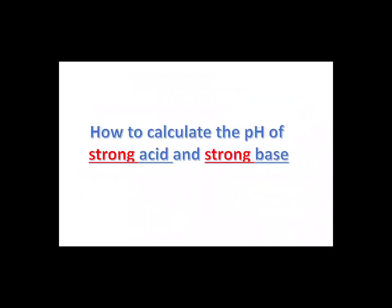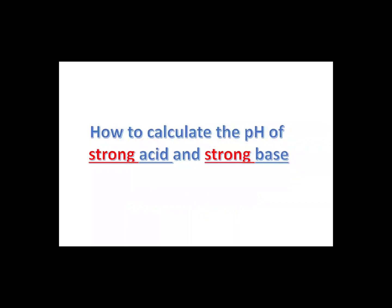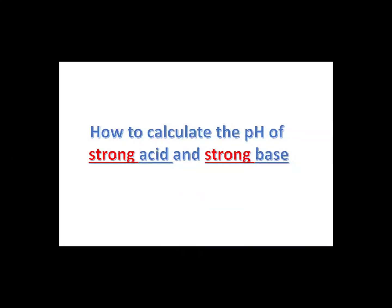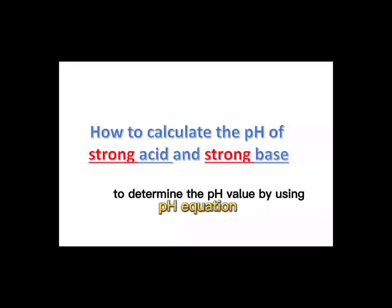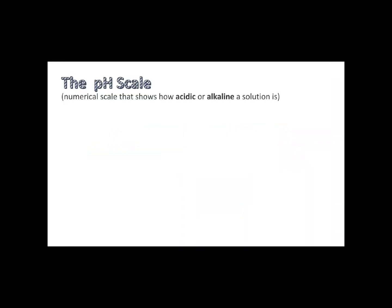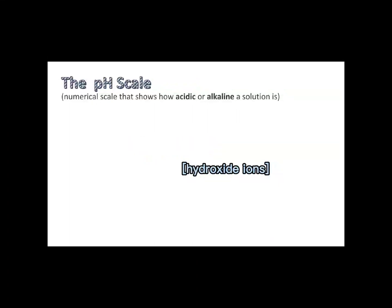Now, let's go to the part of calculating the pH value of strong acid or strong base. As we know, substances can be classified as acidic, basic, or neutral. But how do we determine whether a solution is acidic or basic? Of course, it can be tested with the help of litmus paper, phenolphthalein, or other indicators. For more accuracy, the best way is to determine the pH value of the solutions. Both acids and bases can be measured using the pH or pOH scale. Both scales provide a measure of either the hydrogen ion concentrations or the hydroxide ion concentrations.